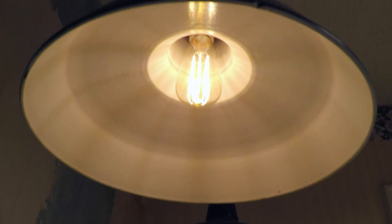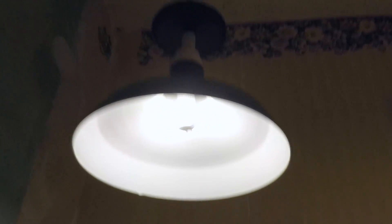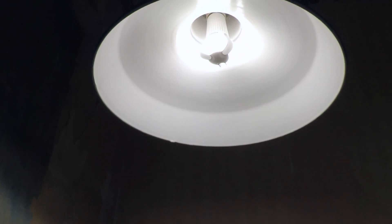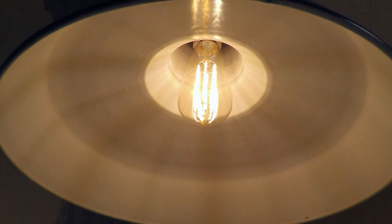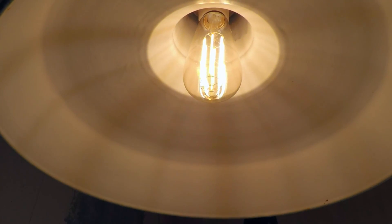So I have two lanterns here. One has the dimmable LED Edison bulb in it and the other lamp has another Phillips bulb in it. Now, the interesting thing that I found here is that when you remove the Phillips bulb, the Edison bulb starts misbehaving. So let's go ahead and do that.